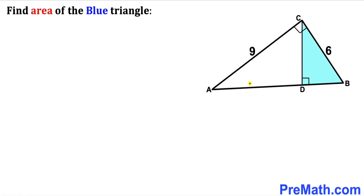Welcome to pre-math. In this video we have got a right triangle ABC such that the side lengths are six and nine units. Moreover, CD is perpendicular to side line AB, and we are going to calculate the area of this blue shaded triangle.